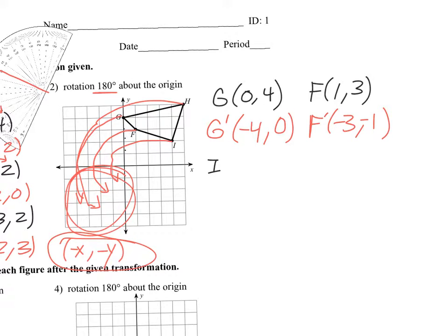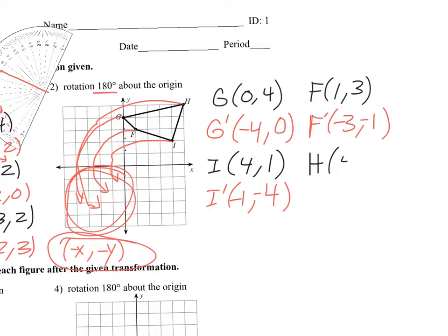Where is I? I is at 4, 1. So where would I prime be? Again, switch your X and Y, and they're both negative because they're both in the third quadrant. And then the last one, H. H is at 5, 5. Switch your X and Y — that gives you 5 and 5 — and then make them both negative.